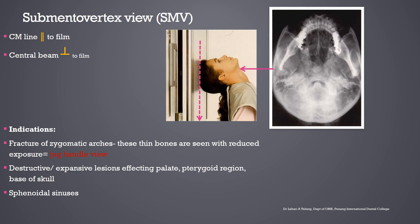The sub-mento-vertex view is different from the previous views. The x-rays come from the front of the patient directed towards the posterior of the skull. The canthomeatal line is parallel to the film, the patient's head is tilted backwards, and the central ray is perpendicular to the sensor or film. Indications include fractures of the zygomatic arches, where the zygomatic arches are seen clearly when the lower arch superimposes over the upper arch. This view is contraindicated for anyone with a cervical condition or suspected fracture in the neck. Destructive or expansive lesions affecting the palate, pterygoid region, base of the skull, and sphenoidal sinuses can also be seen.